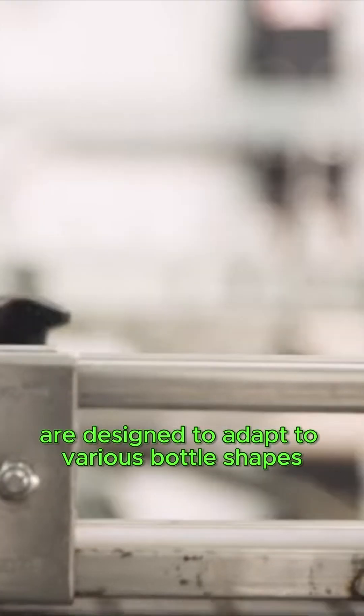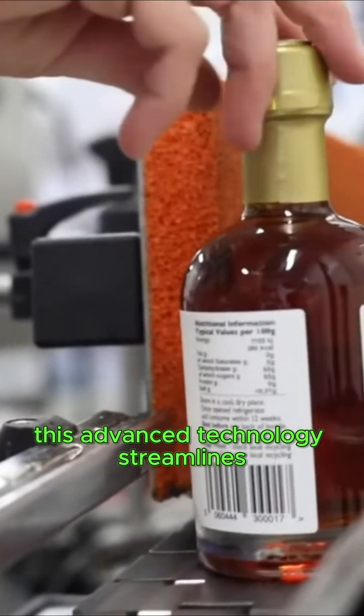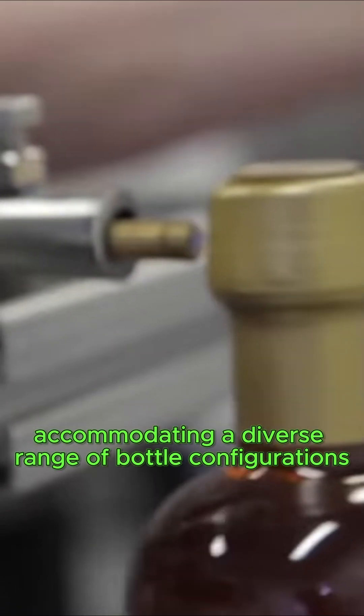Automated labeling machines are designed to adapt to various bottle shapes, enhancing operational efficiency. This advanced technology streamlines the labeling process, accommodating a diverse range of bottle configurations.